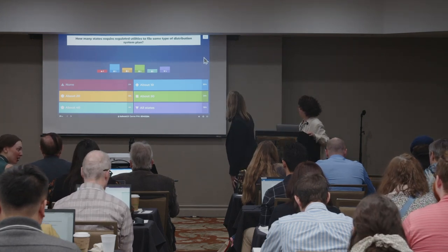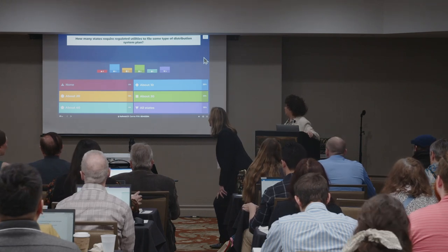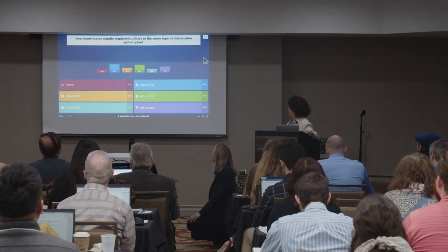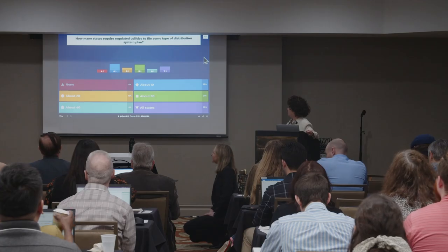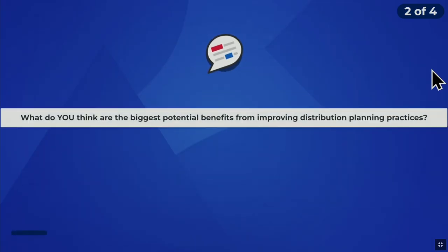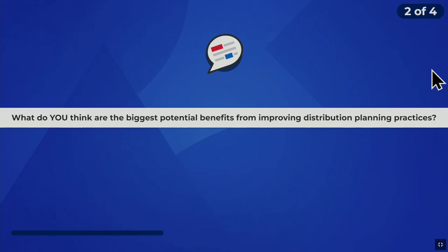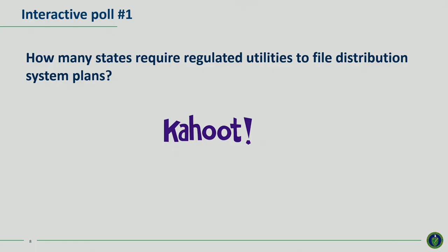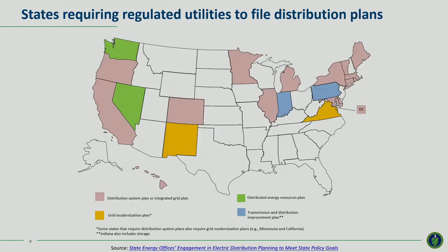We have a range of answers — the predominant ones were about 10 states or about 30 states. The answer is about 20. About 20 states in the country have established requirements for regulated utilities to file some kind of grid plan.